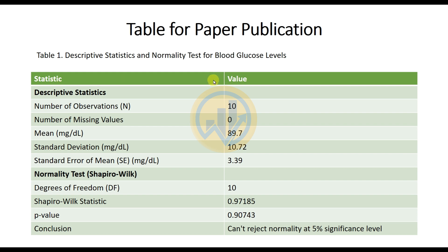The table shows statistics and values. For descriptive statistics: number of observations = 10, missing values = 0, mean = 89.7, standard deviation = 10.72, standard error of the mean = 3.39. For the normality test — Shapiro-Wilk test: degrees of freedom = 10, Shapiro-Wilk statistic = 0.97, p-value = 0.90. The conclusion is that normality cannot be rejected at the 5% level of significance.